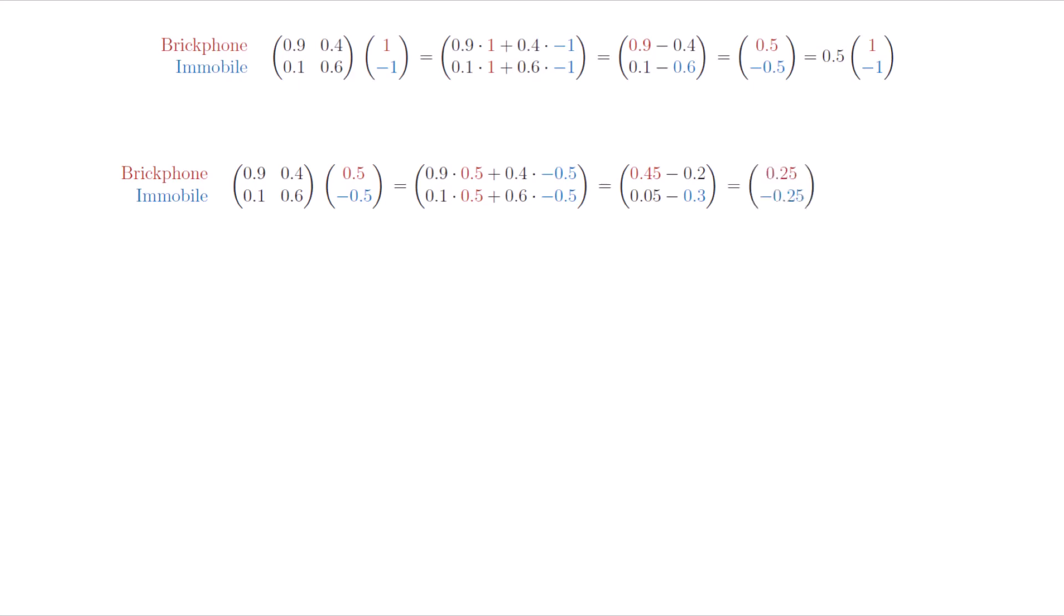We will use the fact that every matrix with the same number of columns and rows, we call such matrices square, has special vector inputs that give the same output but scaled by a constant. For example, 1 and negative 1 is such a vector input for our matrix. The output is just the original vector scaled by half. Let's do it again. Computing what will happen after 12 periods is easy. It is just 1 times half to the power of 12, actually something quite close to a zero vector.